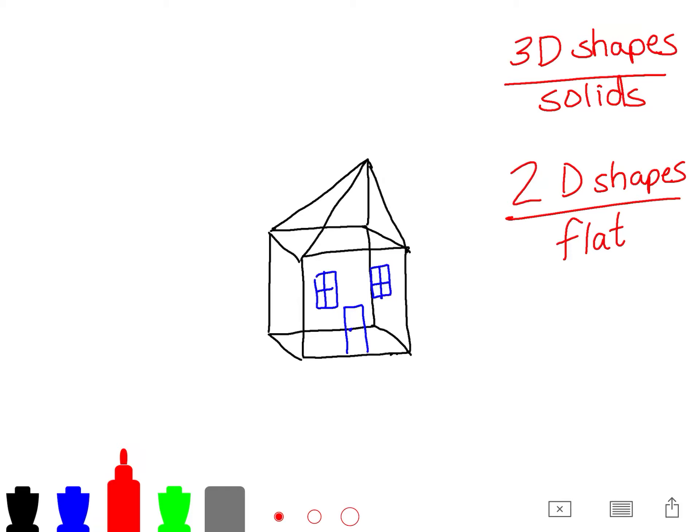It wants you to outline your flat shapes. So I see right here I've got what should be squares, but they're kind of rectangles. We'll go with two squares and one rectangle.